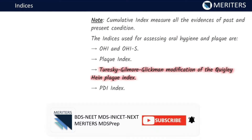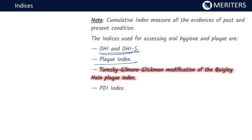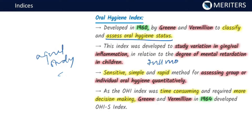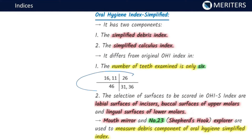Indices used for assessing oral hygiene and plaque include the Oral Hygiene Index, Plaque Index, Turesky-Gilmore-Glickman modification, and others. The Oral Hygiene Index was developed by Green and Vermillion in 1960 to classify and assess oral hygiene status, originally developed to study variation in gingival inflammation in relation to the degree of mental retardation in children. It is a sensitive, simple, and rapid method for assessing oral hygiene quantitatively. However, as the original OHI was a full mouth index and time-consuming, Green and Vermillion developed the simplified version four years later.